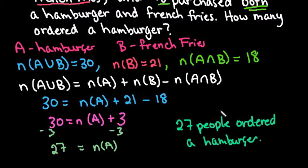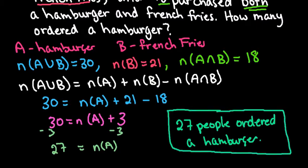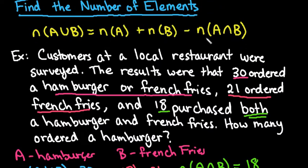So just a recap of finding the number of elements. Remember that this formula can be used to find any single one of them. So we can say that the number in A or B is equal to the number of A plus the number of B minus the number in both.